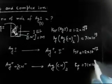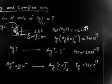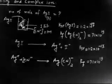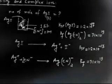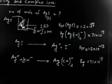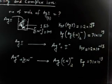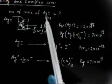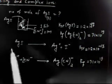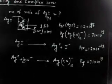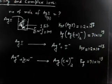The Ksp value is 1.2 × 10⁻¹⁷ and the Kf value is 7.1 × 10¹⁹. Now, what assumptions are we going to make? Take 30 seconds to think about the plan for solving this problem. The number of moles of AgI dissolved means we first find the solubility, then multiply by the volume.